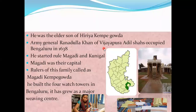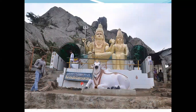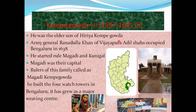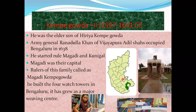There is also the famous Gavi Gangadishwara temple built by Iriya Kempe Gowda. The Army General Ranadulla Khan of Vijayapura Adil Shah occupied Bangalore in 1638. After that, Kempe Gowda started rule for Magadi and Kunigal, and Magadi became their capital. The rulers of this family are called Magadi Kempe Gowda.